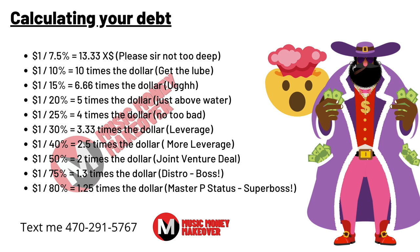Calculating your debt — I put together a rate sheet so you all could see. These percentages represent the mechanical royalty being removed and the producer royalty being pulled out, along with any other extra royalties. This is your bottom-out artist royalty. At 7.5% that's 13.33 times the dollar — I give you a dollar, you give me $13.33 back. At 10% artist royalty, I give you a dollar, you give me $10 back — that's the lube stage right there.